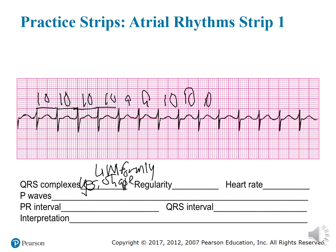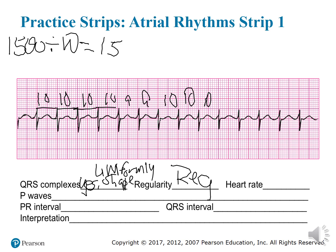The intervals are pretty much nine or ten across, so we know this is a regular rhythm. We'll use the 1500 method and divide 1500 by 10, which gives us 150 beats per minute. So we know our heart rate is 150 beats per minute.